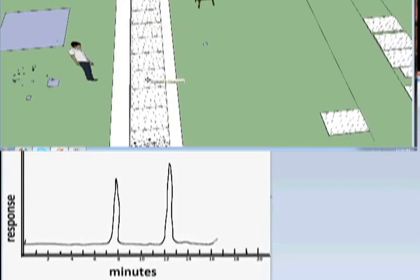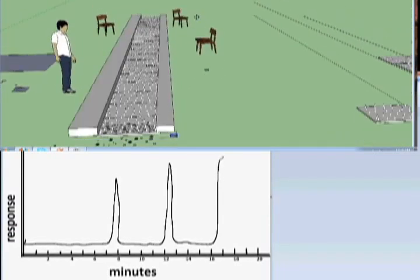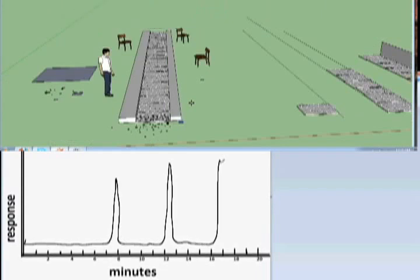So they're separated, kind of. They're not perfect, but they're separated depending upon the nature of the interaction. This is the whole idea of chromatography.